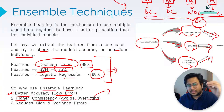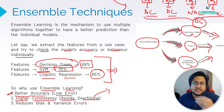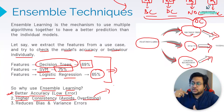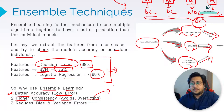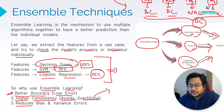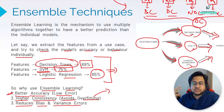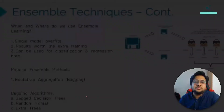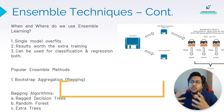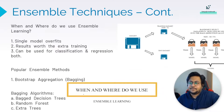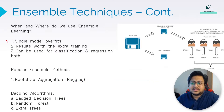Overfitting is a scenario where training accuracy is high but test accuracy is low — your model is well-equipped with training data information but doesn't perform on test data. The third benefit is it reduces bias and variance errors. These are the three important reasons why we use ensemble learning.